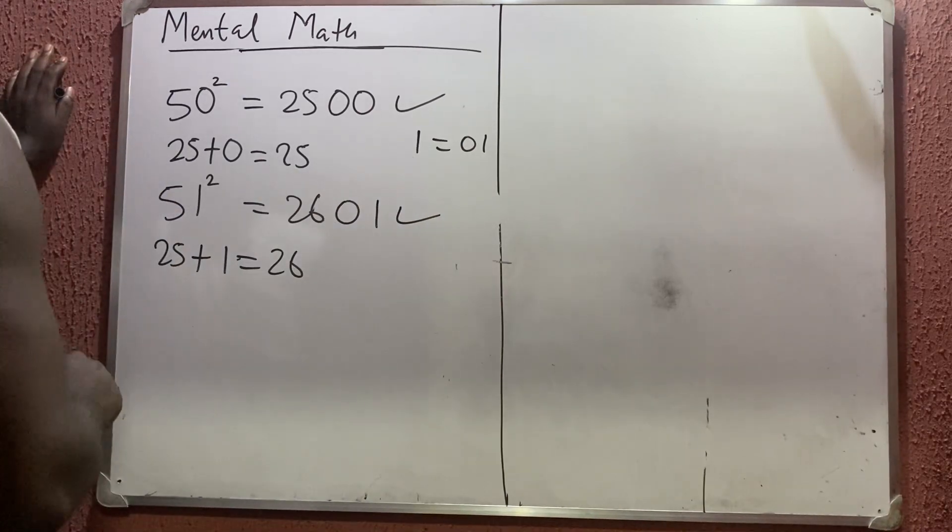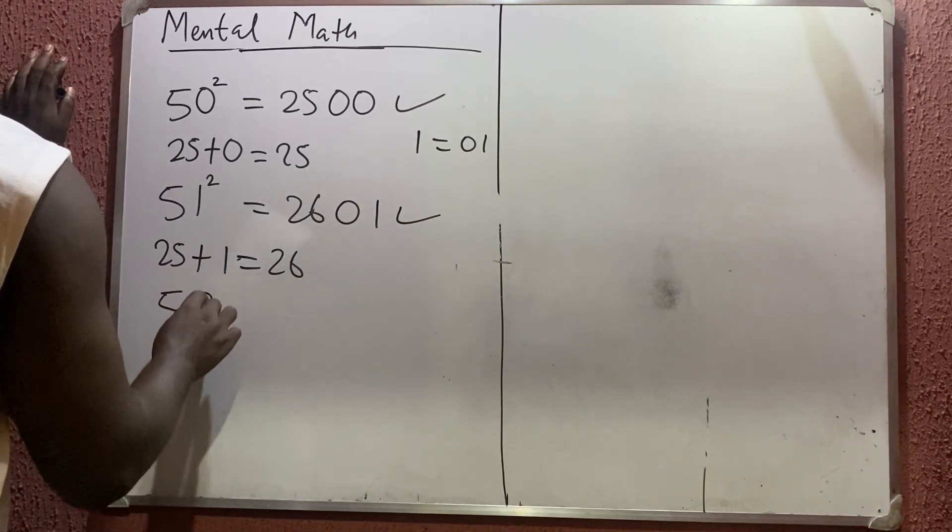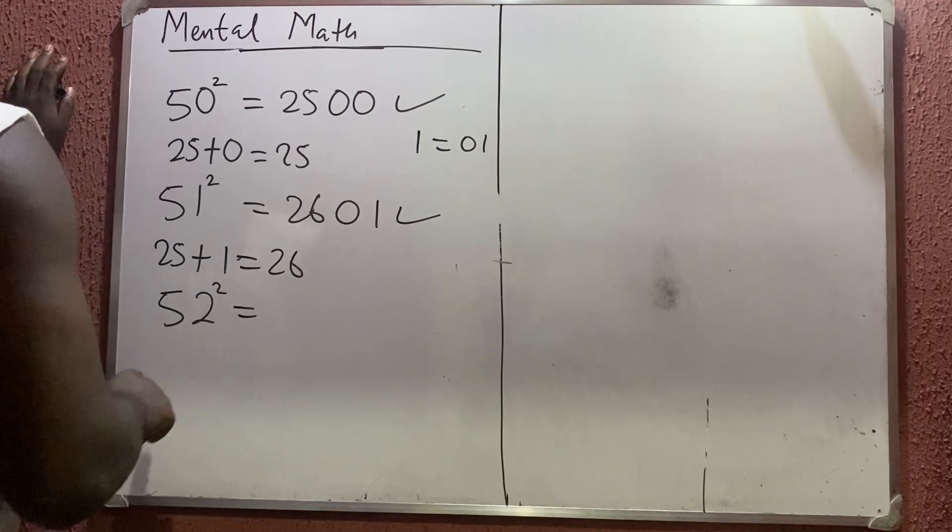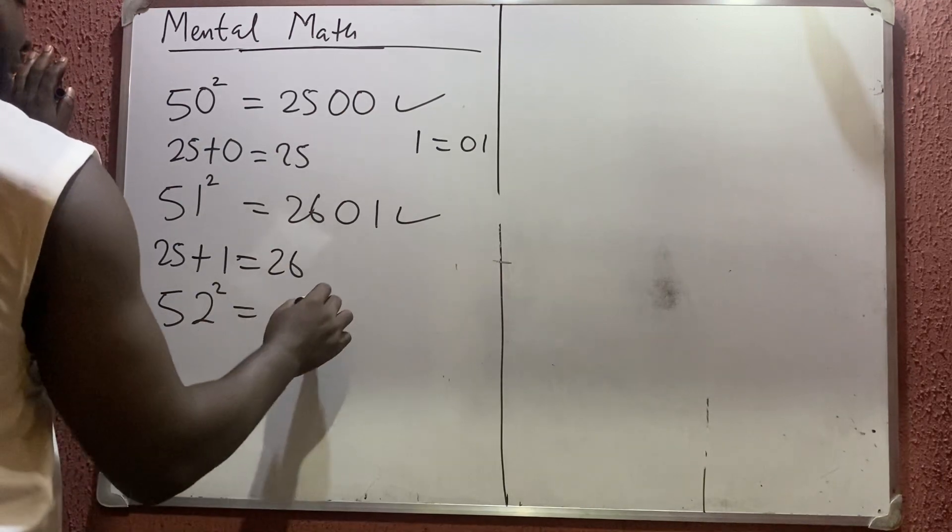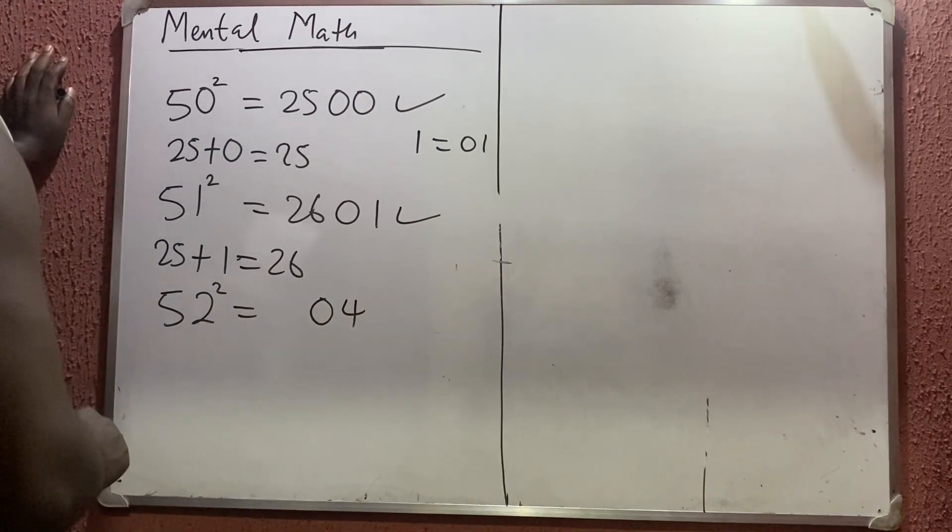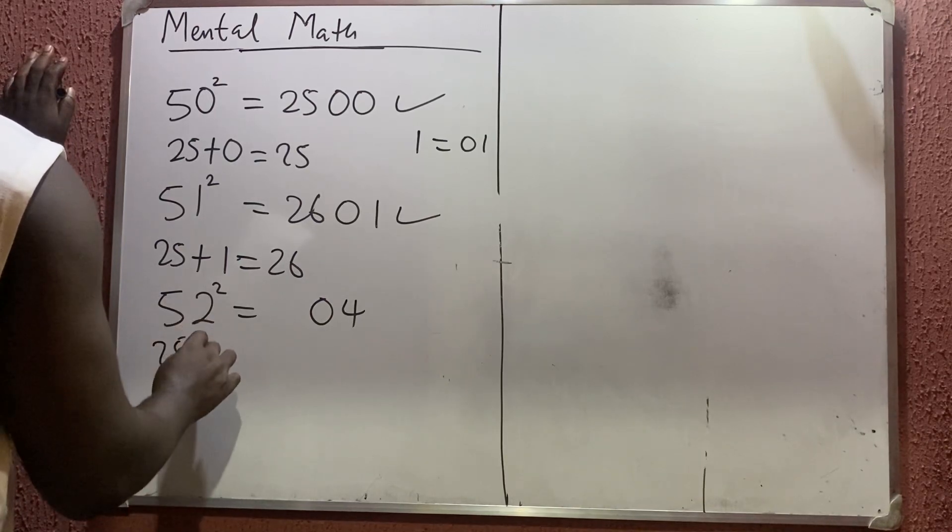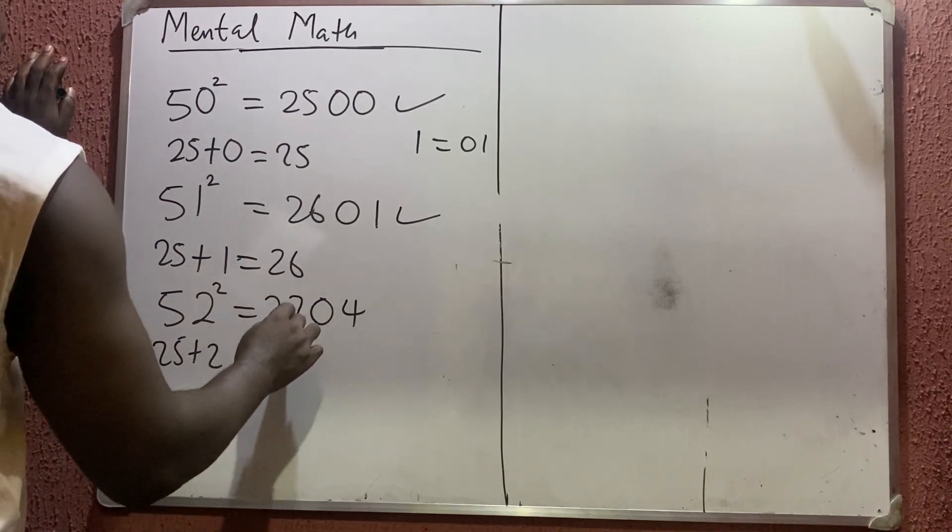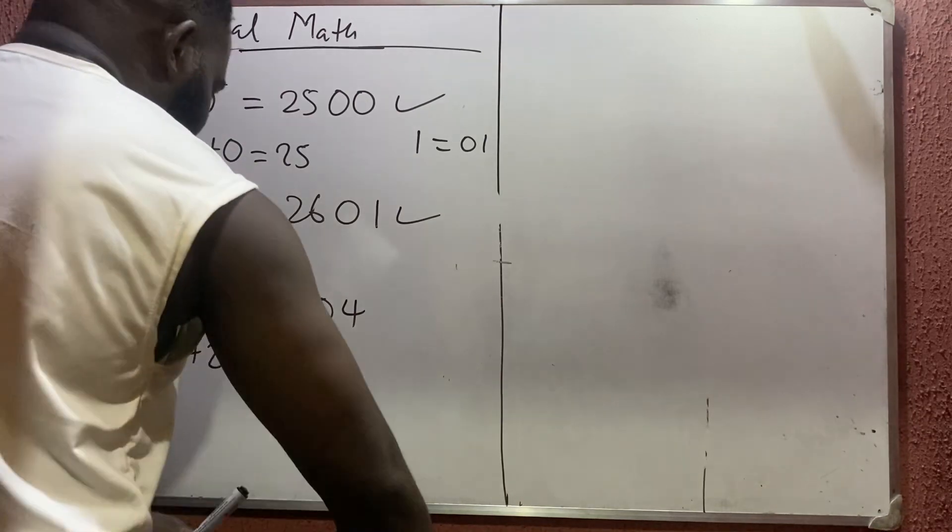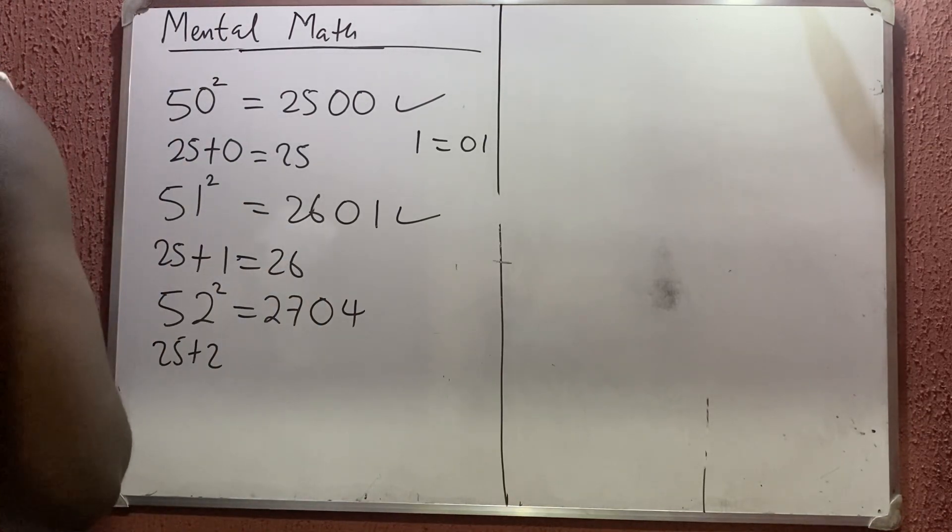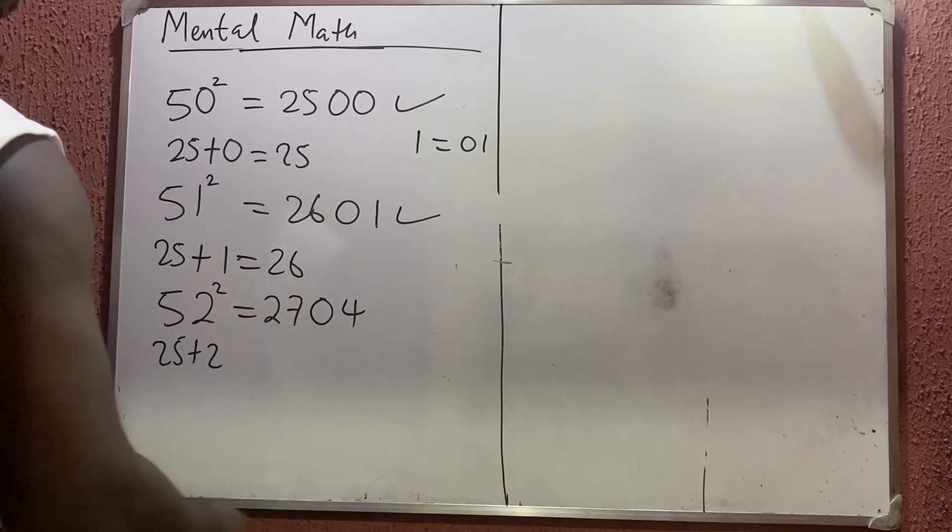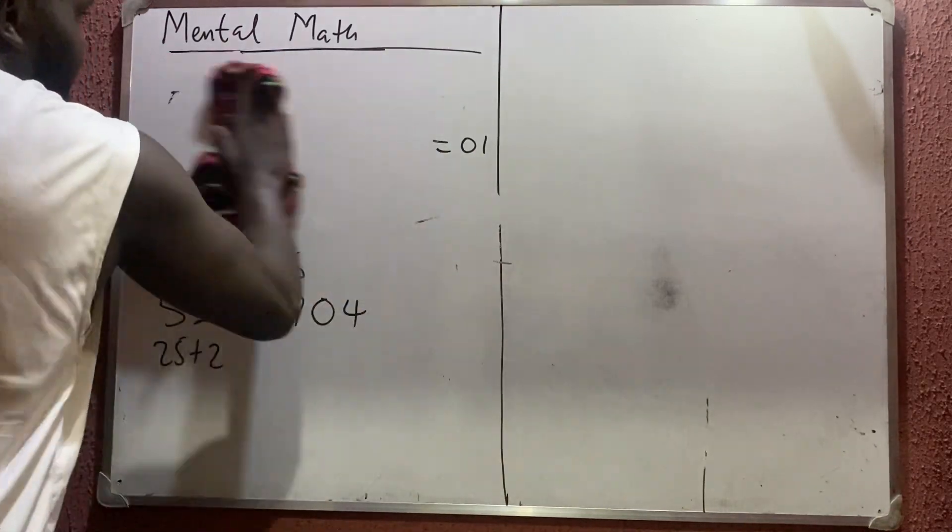Let us try 52. 52 squared. 2² is 4, so write it as 04. It must be a two-digit number. 5² is 25. 25 plus this 4 I'm seeing here gives you 27. So let us check if it is correct. 52 squared... aha, 2704.